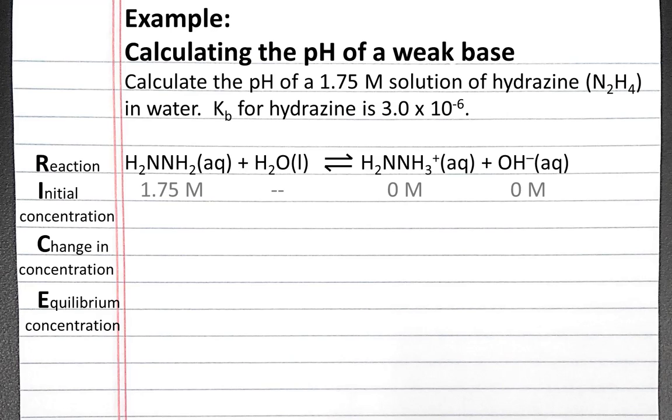We'll try to calculate how much hydrazonium and hydroxide we have at equilibrium. So we start with 0 molar for both of these.